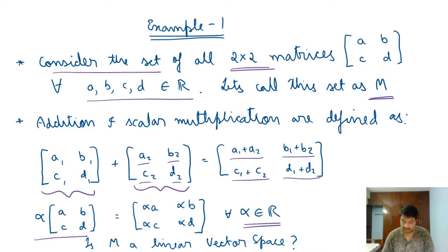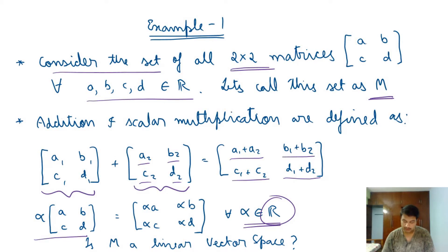Multiplying by a scalar alpha means multiplying all four elements of the matrix by alpha, where alpha belongs to the reals. This set is defined over a real field because all scalars multiplied with elements of the set must be real for the result to belong to M.